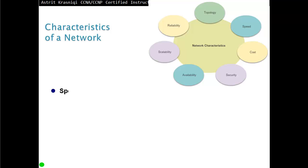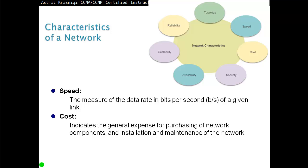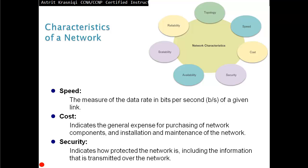Characteristics of a network: Speed is the main characteristic. It measures the data rate in bits per second of a given link. Then we look at cost, which indicates the general expense for purchasing, installation, and maintenance. Then we have security, which indicates how protected the network is, including information transmitted over it. The first things we think about are: how fast is it, can it cope with our demands, what is the cost, and does our network support security like cryptography — can we encrypt our data?